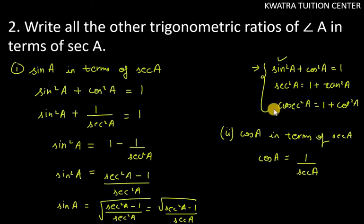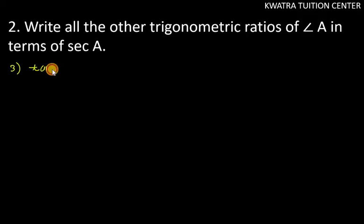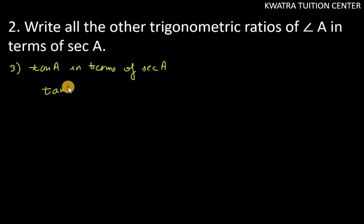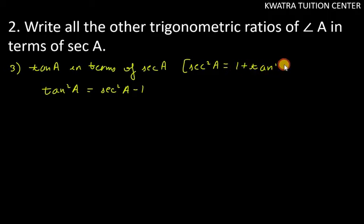The third ratio is tan A in terms of sec A. The appropriate identity here is the second one: sec²A = 1 + tan²A, because it contains both sec A and tan A. We rearrange to isolate tan A: tan²A = sec²A − 1.